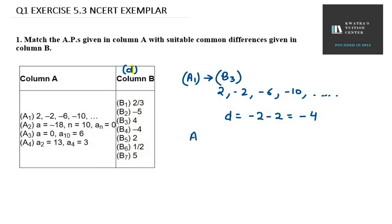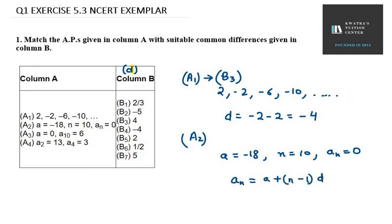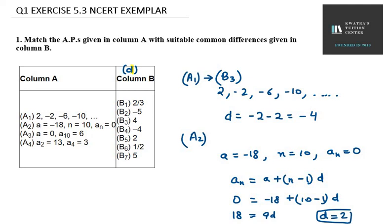Now for A2, we are given a = -18, n = 10, and an = 0. I will use the nth term formula: an = a + (n-1)d. So 0 = -18 + (10-1)d. Bringing -18 to the left gives us 18 = 9d, so d = 2. That means A2 matches with B5.